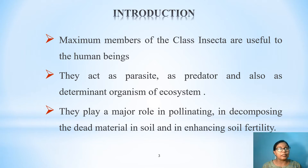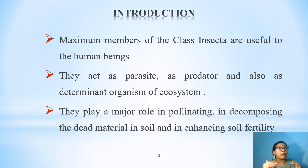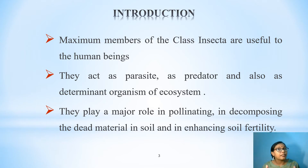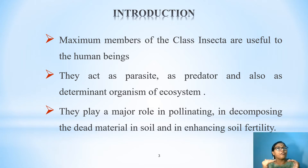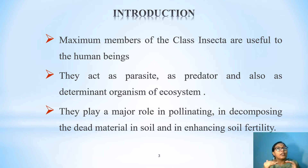Coming to the introduction part, beneficial insects play an important role in animal birth. These insects perform valued services. They play a major role in reducing and controlling the population of plants and animals by acting as a parasite, as a predator, and also as a determinant organism of the ecosystem. They also play a major role in pollinating different useful plants and decompose dead material in soil, enhancing its fertility by cycling decayed soil nutrients or killing nasty insects that are harmful for plants.